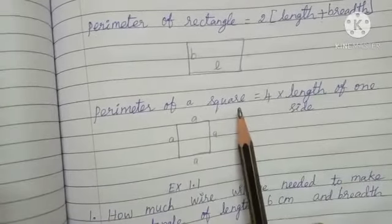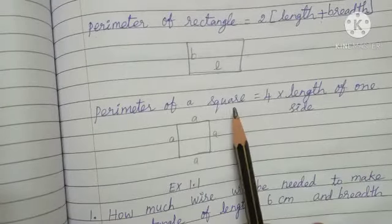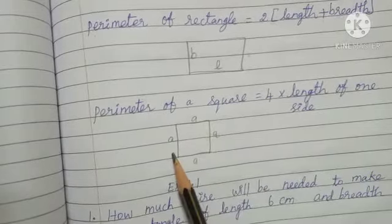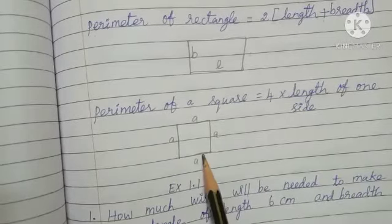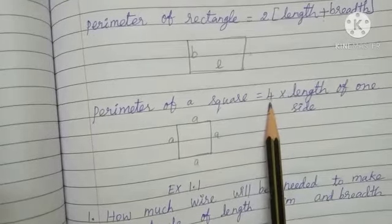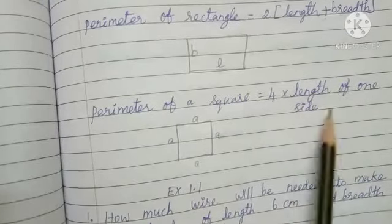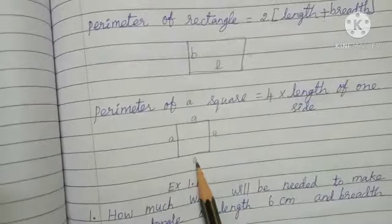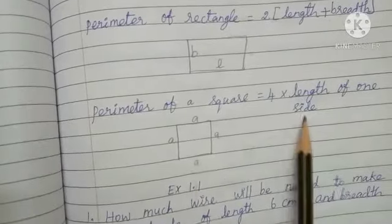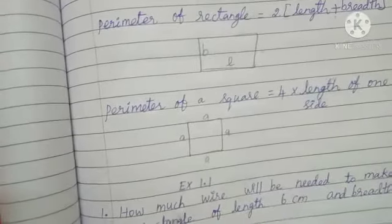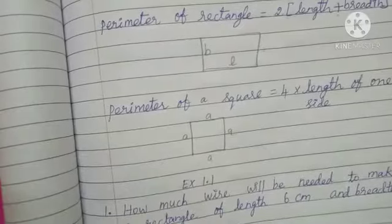Perimeter of a square: already you studied that a square has all sides equal, so all sides have the same value. So you do 4 multiply by the length of one side. Any one side value, multiply by 4, and you get the perimeter. This is the formula for the perimeter of a rectangle and square.